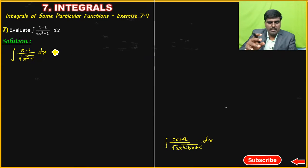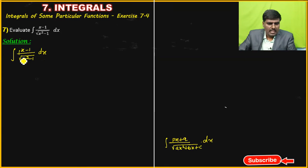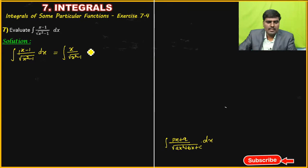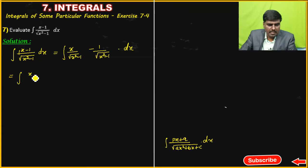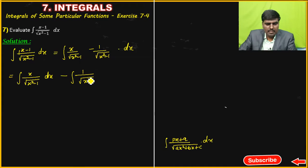If you want to solve the question, just divide individually. That is individual divide. So we get: integration of X divided by root of X squared minus 1, minus integration of 1 by root of X squared minus 1, into dx.